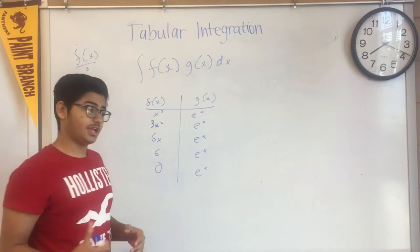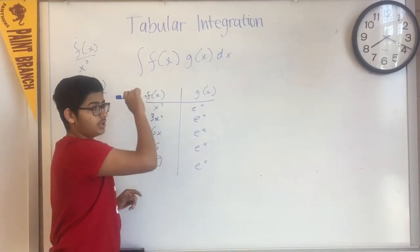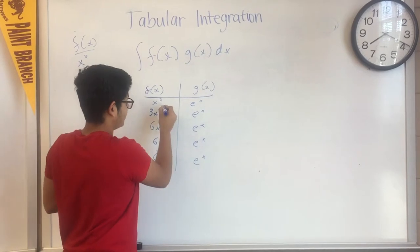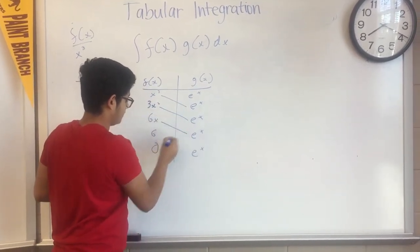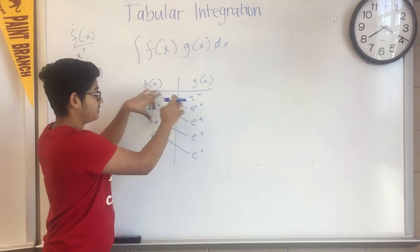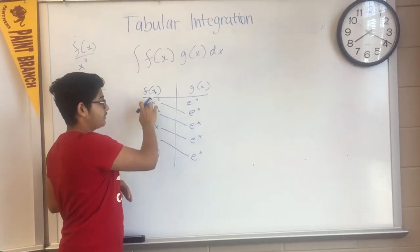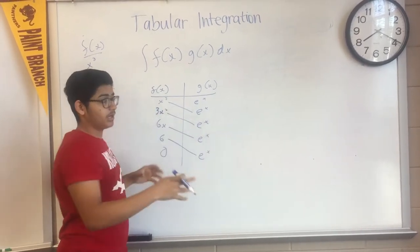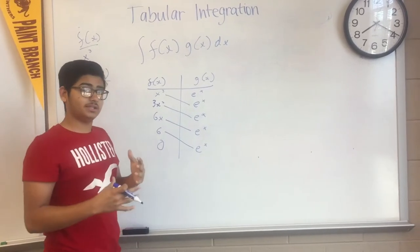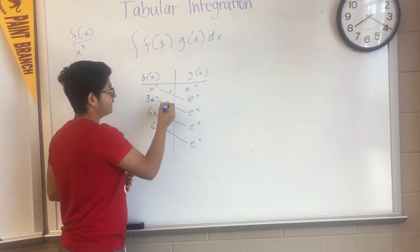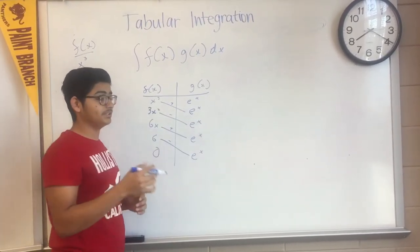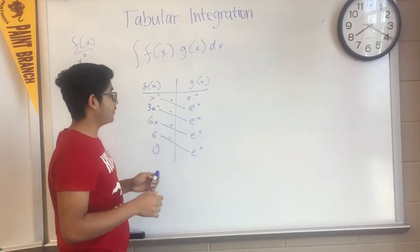Now, here's where the actual integration happens. What we do is draw diagonal lines from each derivative of f to the next integral of g. This diagram shows that we are multiplying these two functions together — the first function with the first integral, the second derivative with the second integral, and so on. What makes this unique is that we alternate signs: positive, negative, positive, negative.